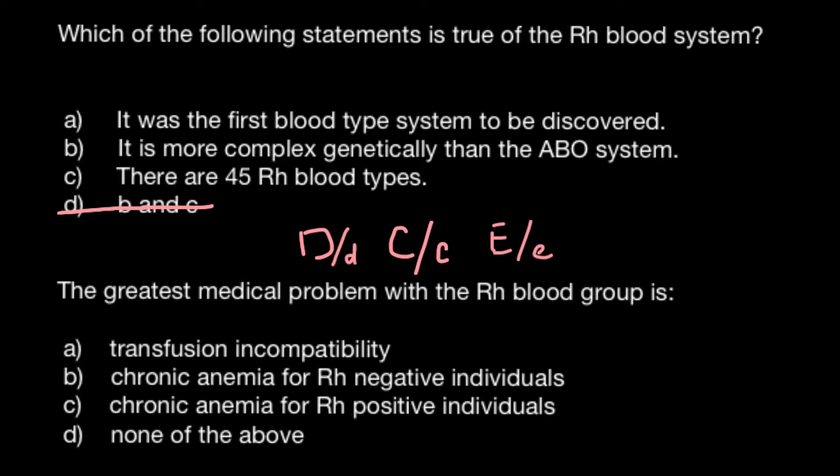By the way, this gene D designates whether Rh would be positive. If it is present, the Rh group would be positive, and if it is missing, that means the Rh group would be negative. So we can cross out answer C.